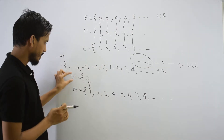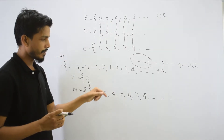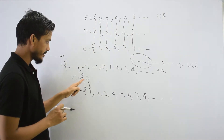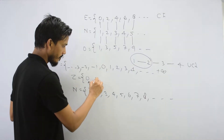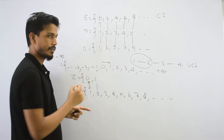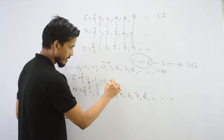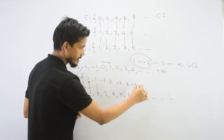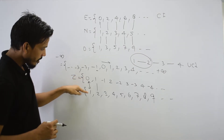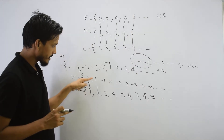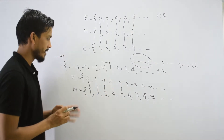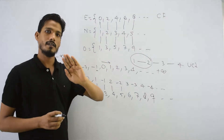We arrange it in this way. We write the integers starting from 0, then alternating positive and negative: 0, then 1, then minus 1, then 2, then minus 2, then 3, then minus 3, then 4, then minus 4, and so on. So the mapping becomes: index 1 maps to 0, index 2 maps to 1, index 3 maps to minus 1, index 4 maps to 2, index 5 maps to minus 3. This is a 1-to-1 mapping.